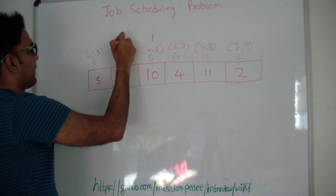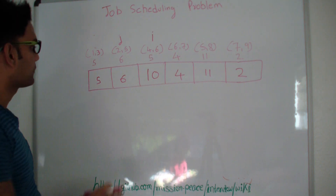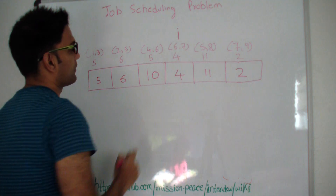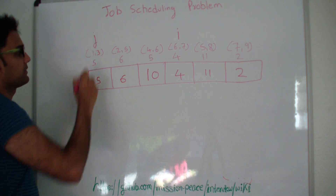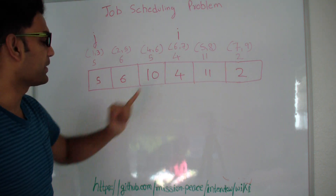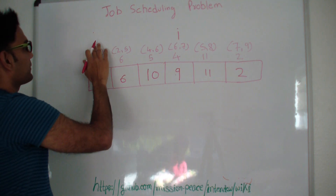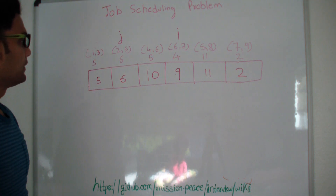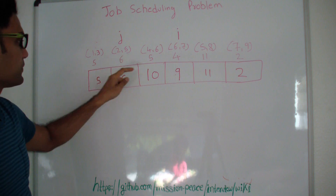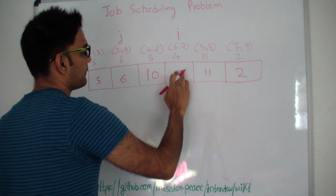Then we move J forward. Jobs 2 (2–5) and job 3 (4–6) overlap, so we can't do both — we don't touch this entry. Then I becomes job 4. J starts again from the first element. Job 1 (1–3) and job 4 (6–7) do not overlap, so we can make at least 9 here. Moving J by 1: job 3 (4–6) and job 4 (6–7) — we can pick both. The maximum we can make is at least the maximum we could have made at job 3 (which is 10) plus 4, giving us 14, which is greater.